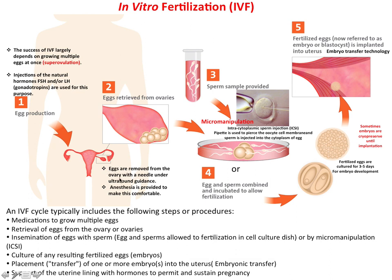In the second step, eggs are removed from the ovary with a needle under ultrasound guidance, and anesthesia is provided to make this comfortable. In the third step, sperm samples are collected. In the fourth step, egg and sperm are combined and incubated to allow fertilization, or the fusion of sperm and ovum can take place by micromanipulation — specifically intracytoplasmic sperm injection, or ICSI. In ICSI, a very thin needle is used to pierce the oocyte cell membrane and sperm is injected directly into the cytoplasm of the egg.